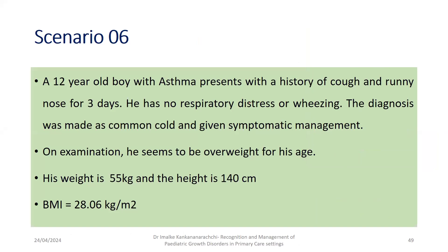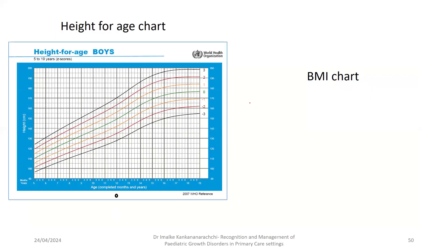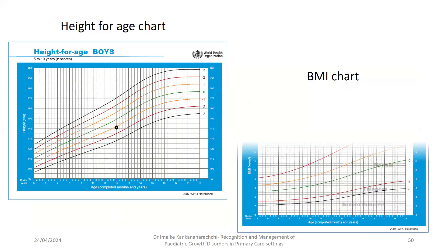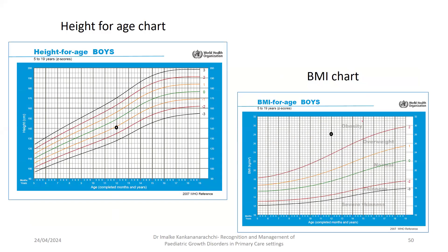Scenario: a 12-year-old boy with asthma presents with cough and runny nose. Diagnosed as common cold and given symptomatic management. On examination he appears overweight — weight 55 kg, height 140 cm, BMI 28. On the BMI chart, the height is okay but the BMI is in the obese range. This is something you need to pick up proactively, as parents rarely complain about overweight.